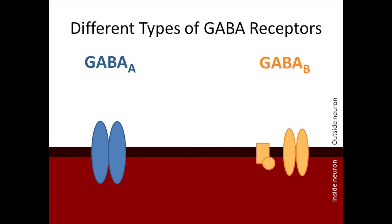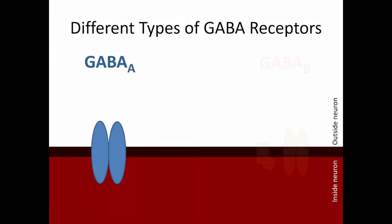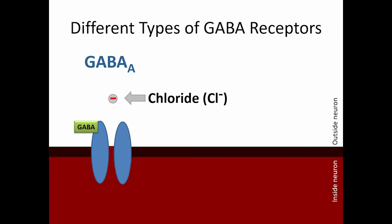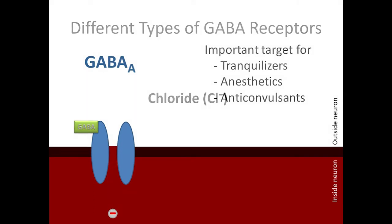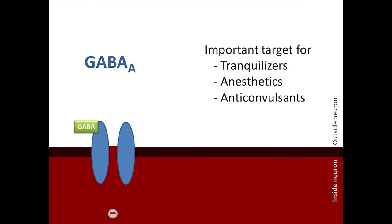There are two primary types of GABA receptors. Both are inhibitory but operate by different mechanisms. GABA-A receptors are ligand-gated ionotropic receptors. When GABA binds, the receptor creates a pore in the membrane — like opening a door — and allows negatively charged chloride ions to enter the neuron. GABA-A receptors are important targets for tranquilizers, anesthetics, and anticonvulsants. GABA-C receptors are so similar in structure and function to GABA-A receptors that they are now considered a subclass, renamed GABA-A rho receptors.